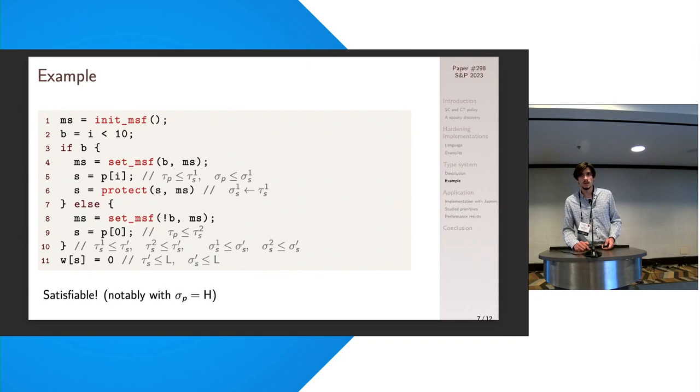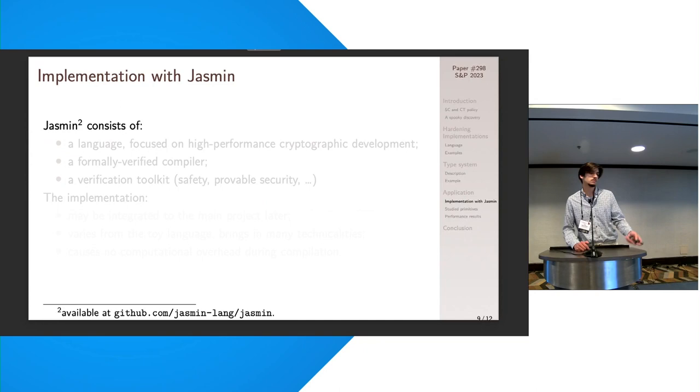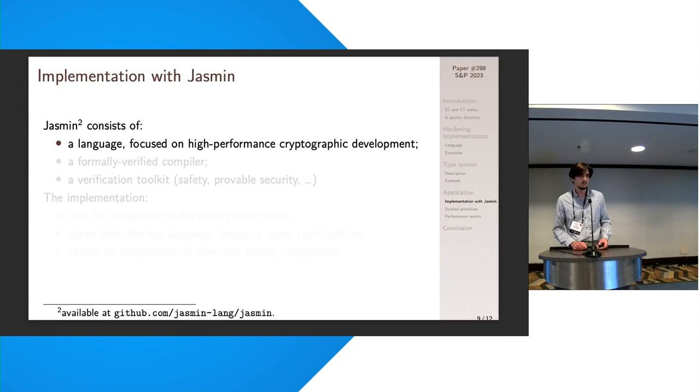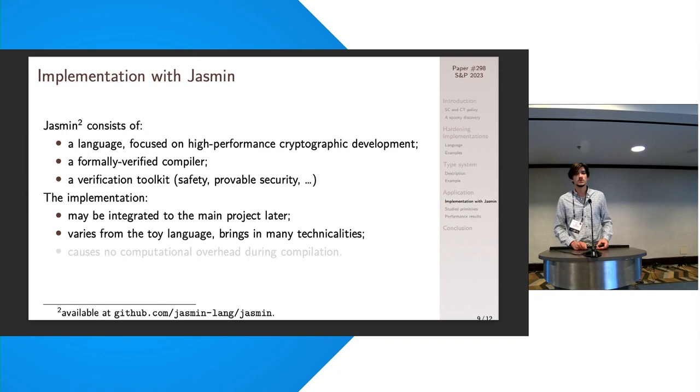So then let's talk a bit about the application that was done of this type system. So the implementation was done with Jasmin, which is an academic language, which is actively developed and focused on cryptographic development with lots of low-level style instructions just to have fine control on the memory and where variables are stored and so on, which is also bundled with a formally verified compiler written in Coq, as well as verification toolkit including verification for safety properties, security, and so on.